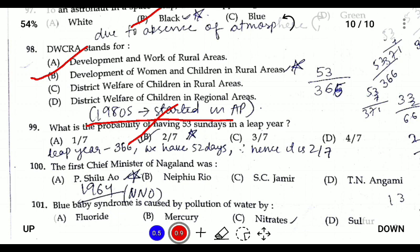Question one hundred (final question for Part 1): the first Chief Minister of Nagaland is P.B. Shilu Ao, who became Chief Minister in 1964 and belonged to the Naga Nationalist Organization. This concludes the video on Part 1 of the NPSC 2021 Question Paper. Part 2 will be covered in the next video. Thank you and have a great day!